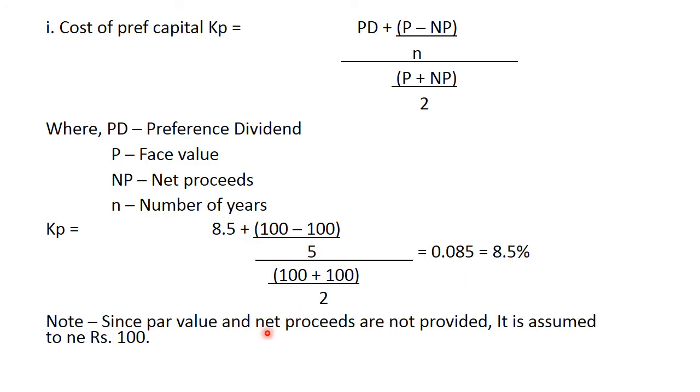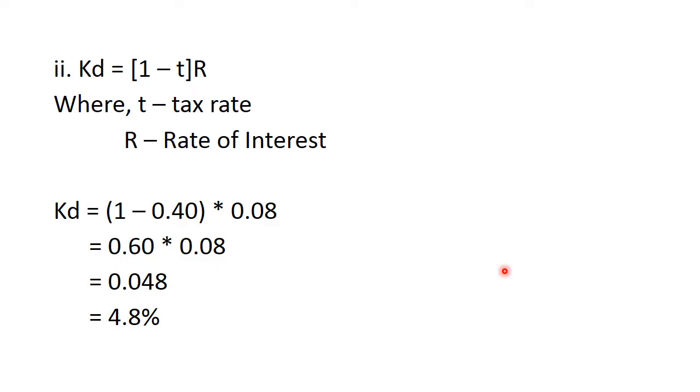Since par value and net proceeds are not provided, it is assumed to be rupees 100. Your par value and face value is assumed to be 100 rupees because here both are same. So it does not matter what value you take over here. This is how we have calculated the preference capital cost and it comes to 8.5%.